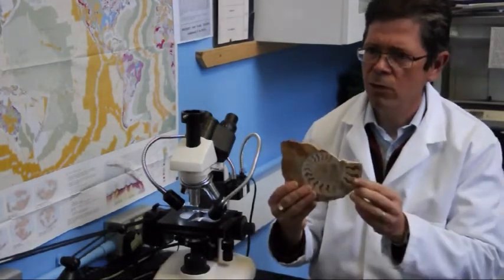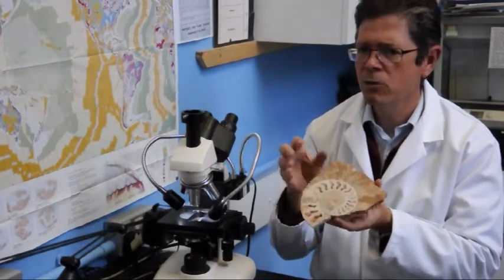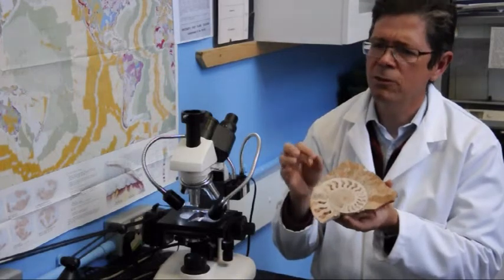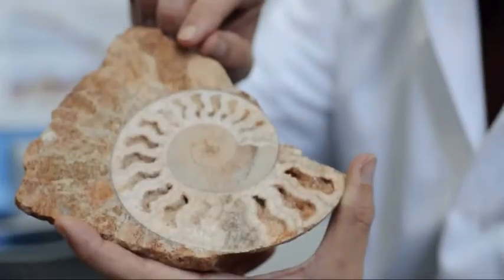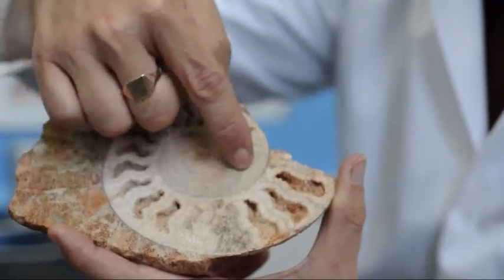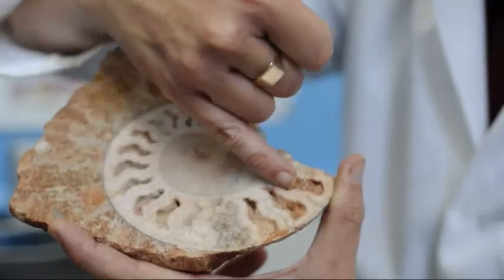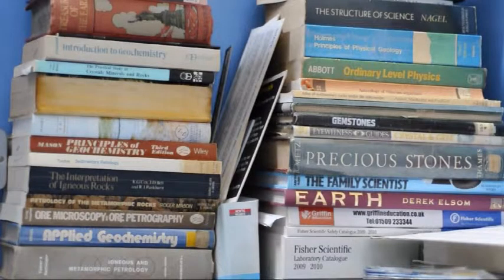The ammonites are a very good example of a group of animals whose individual types lived and died very quickly. And so by finding a specific species or type of these, we can be very certain of a moment in time, wherever in this world you find that particular species.